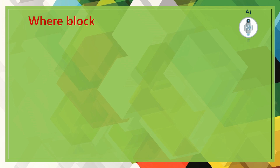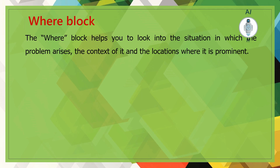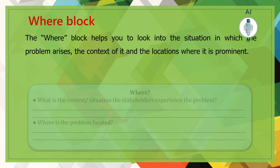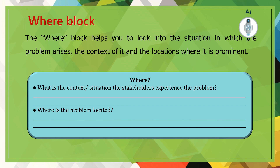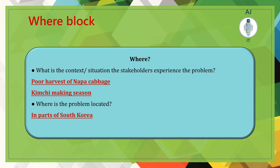The third block is the 'where' block. This helps us look into the situation in which the problem arises — the context and the location where it is prominent. In our example, the context is a poor harvest of napa cabbage or a rise in napa cabbage prices during the kimchi-making season. This problem is located in parts of South Korea.